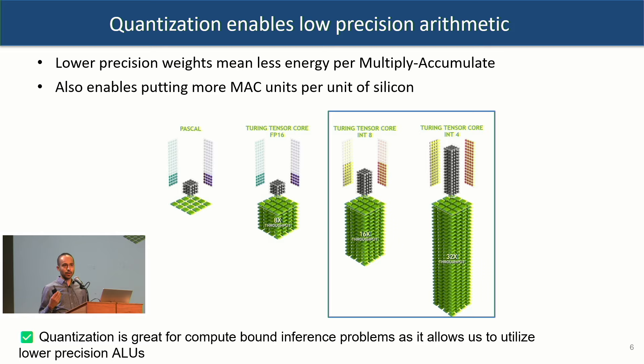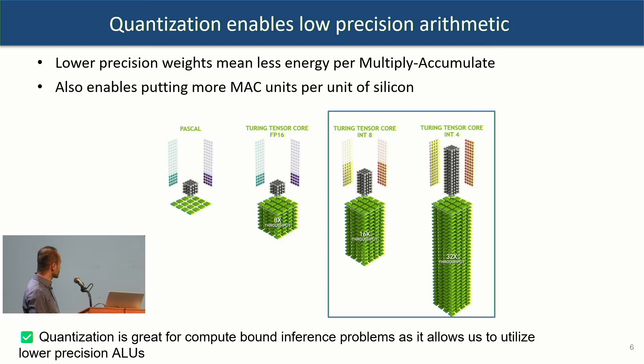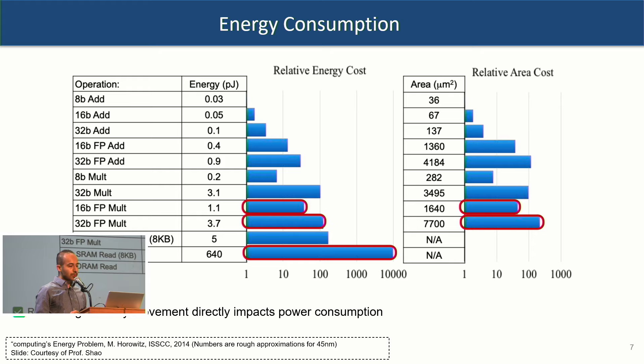There are also problems for which compute is important. CNNs have a lot of compute for every byte of memory loaded — this is called arithmetic intensity. Training large language models with a large batch also has high arithmetic intensity due to dense matrix-matrix multiplications. Here, quantization is also helpful because you can utilize reduced-precision hardware such as NVIDIA's tensor cores, which provide significantly better throughput when performing arithmetic in reduced precision.